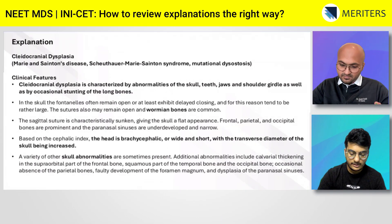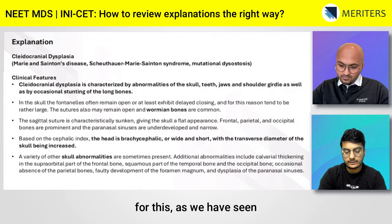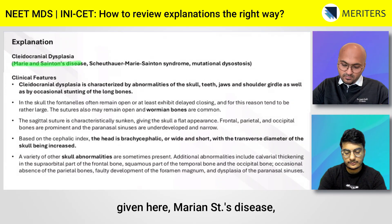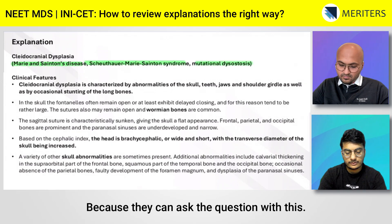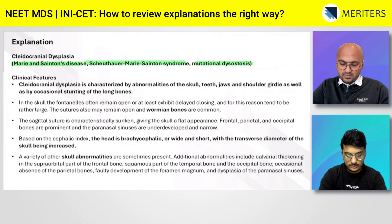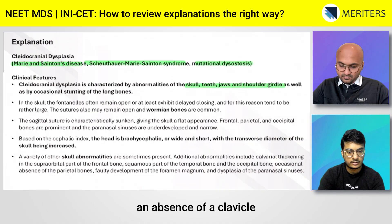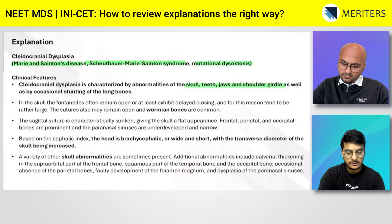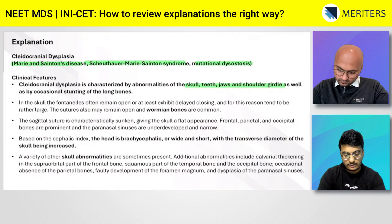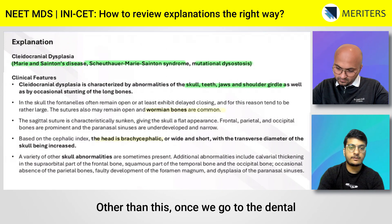The goal is to focus on the key points. First, know the synonyms: Marie-Sainton disease, mutational dysostosis, and others — because the question options could use these alternative names. Then look at the non-dental findings: absence of a clavicle, skull abnormalities, brachycephalic head (wide and short), and wormian bones are common. These highlighted points are what you must remember.